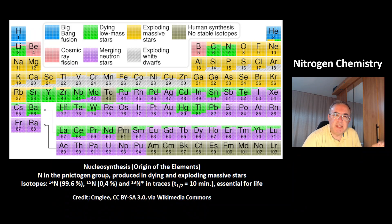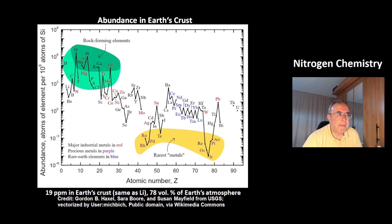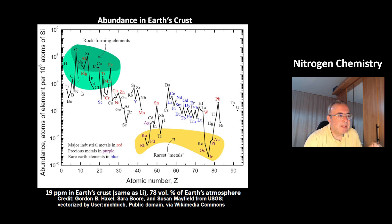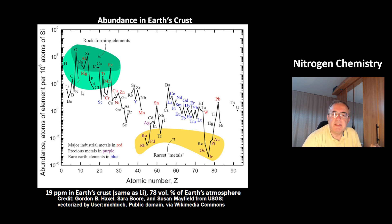Nitrogen is an essential element for life. This is a picture of the abundance of the chemical elements in Earth's crust. Nitrogen makes about 19 parts per million in Earth's crust — it is not in the top 10, about the same as lithium. But in the atmosphere, it makes 78% by volume.